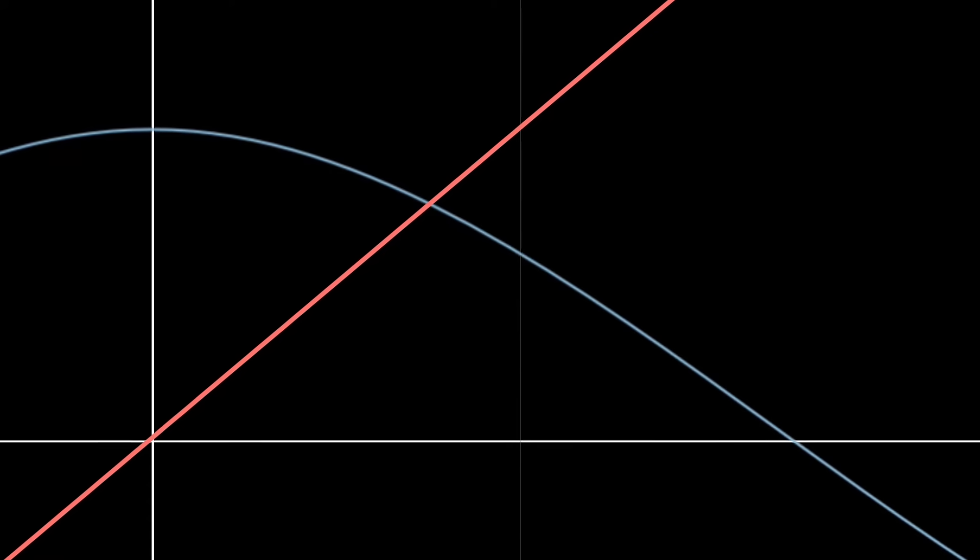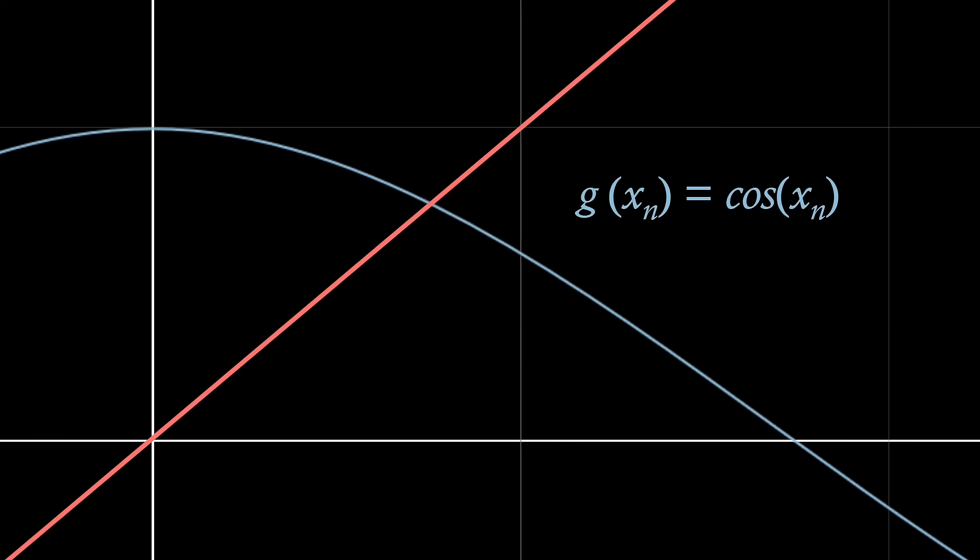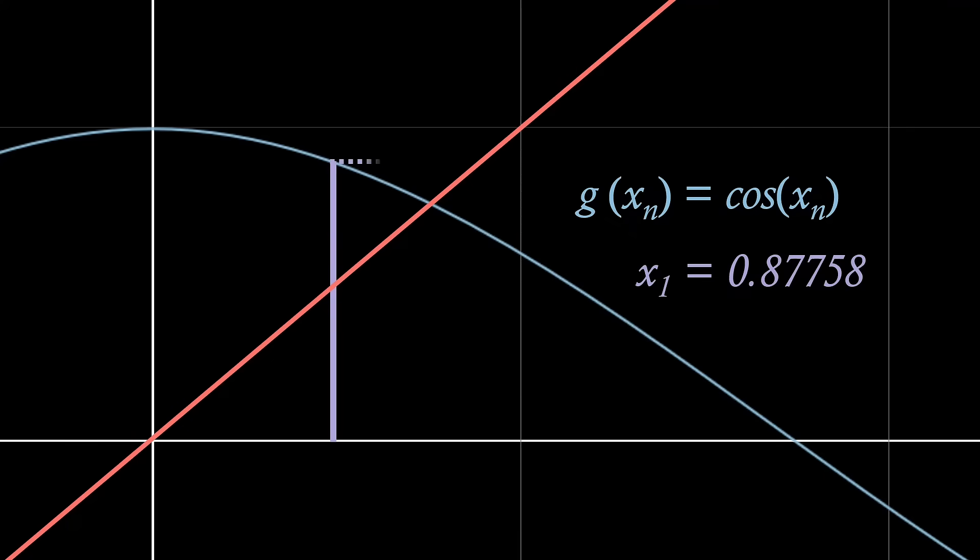For our example g of x we found earlier, if we set our initial guess, x0, to be 0.5, then by the iterative formula we have just shown, the next estimate, x1, will be equal to cos 0.5, which is just 0.878, as shown here, which is equivalent to drawing a line up from 0.5 up to the g of x curve, drawing a line across to y equals x, and then drawing a line down.